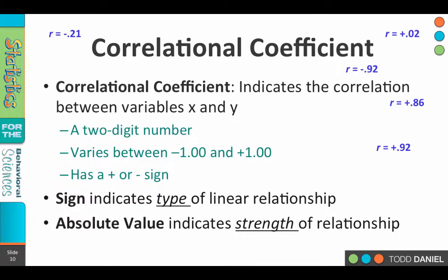It varies between negative 1 and positive 1. We don't see any values greater than or less than positive or negative 1, and each of these correlational coefficients has a plus or minus sign, and this tells us something very important. The sign tells us the type of linear relationship. Is it positive or negative? And the absolute value tells us the strength of the relationship between these two variables.